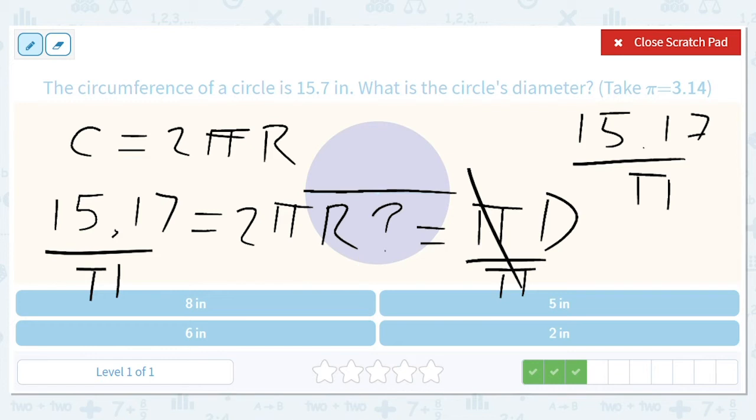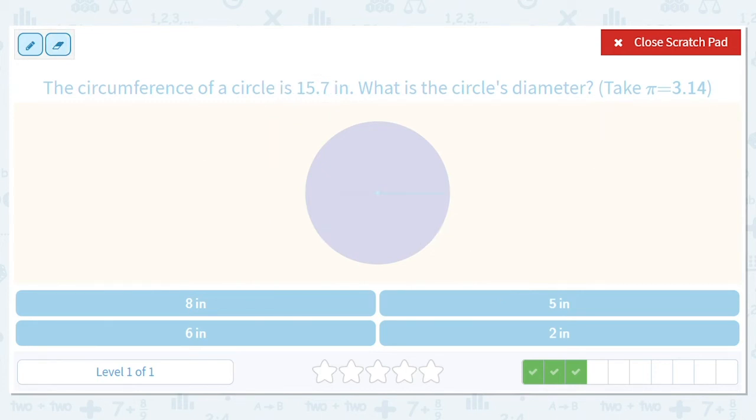So d equals 15.7 divided by pi. Not 15.17, 15.7. So the diameter is 15.7 divided by pi, and pi is around 3, so the number is going to be around 5. It's going to be a little bit—yeah, it's going to be 5. I'm just going to skip that step.